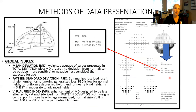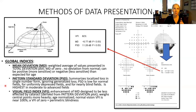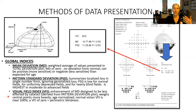Our global index measures are single-number representations of the visual field. The mean deviation tells us on average how depressed or elevated the visual field is compared to normal — it won't tell us about localized loss. The pattern standard deviation highlights localized pattern-specific loss; it's a measure of how smooth the shape of the hill of vision is. If there's a big chunk taken out in a nasal step or arcuate bundle defect, the pattern standard deviation will increase. The visual field index is the most recent global index measure — an age-normalized percent of normal vision, ranging from 0% (perimetrically blind) to 100% (normal vision).